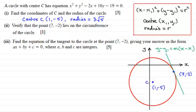And we can do that very easily by working out the gradient of the radius, and then using the perpendicular gradient rule, that is the product of the gradients should equal minus 1, to get the gradient of the tangent.